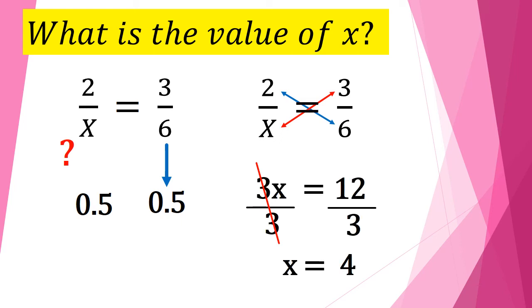There is another way to find the value of x or the shortcut way. You just multiply 2 times 6, that is equal to 12. So the product, you divide it by 3. So 12 divided by 3 is equal to 4. That is the shortcut way.